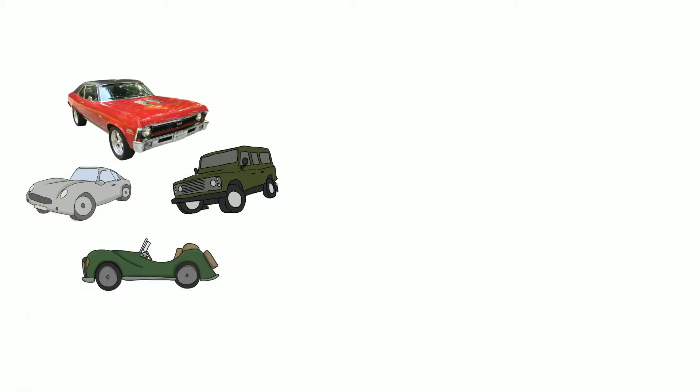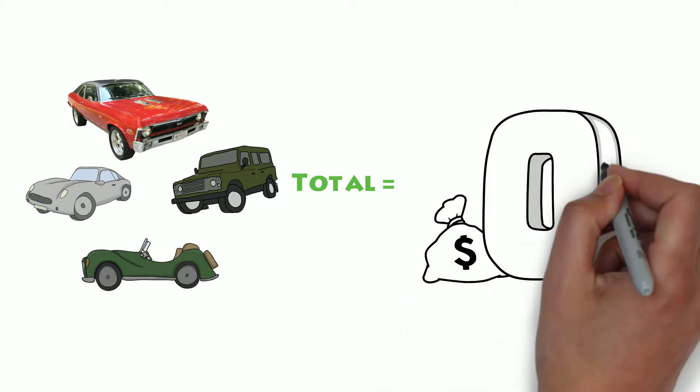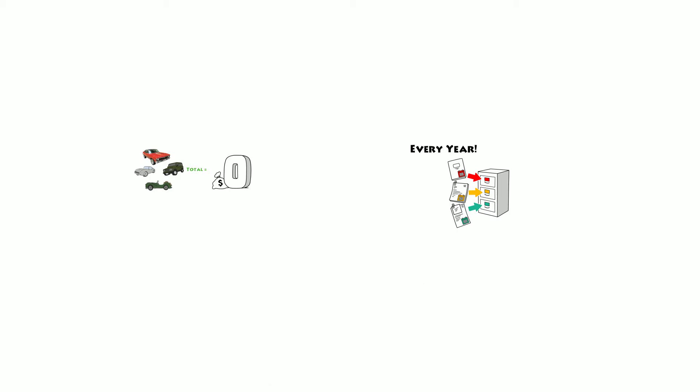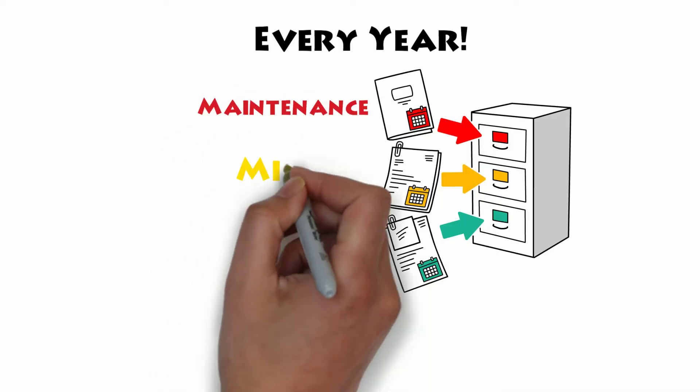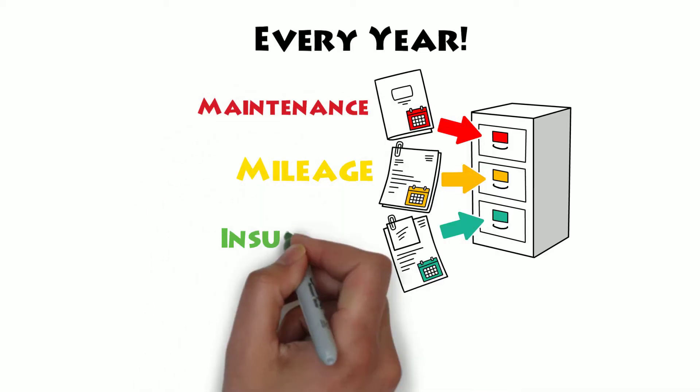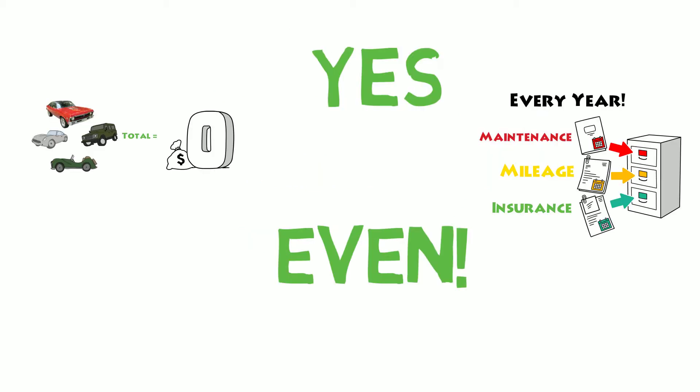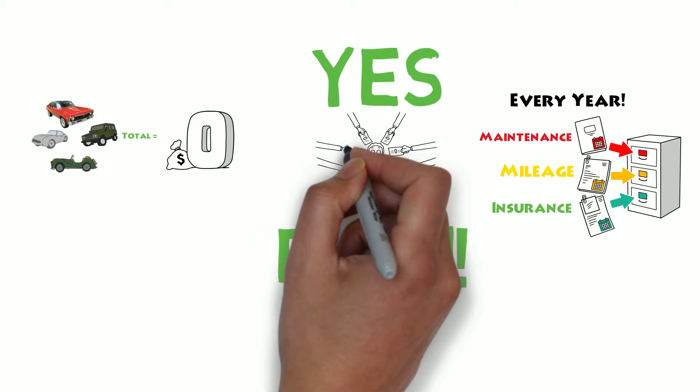But let's get back to the cool car. The cost of this car, in addition to the others that I own, comes out to $0 every year when I file my taxes. The maintenance is a tax write-off. The mileage is a tax write-off. The insurance is a tax write-off. And yes, even the payments are a tax write-off.